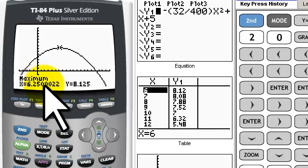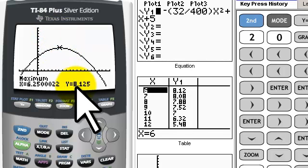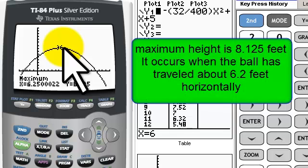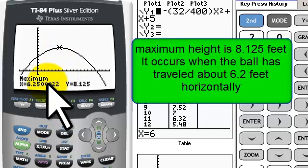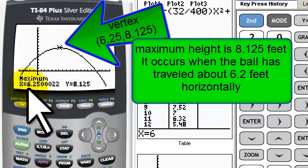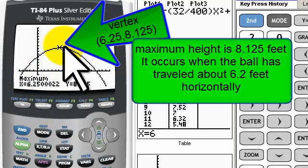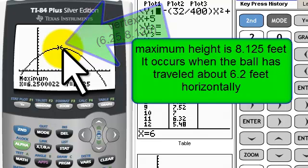And this is saying the maximum is 8.125 feet. That's the highest the ball got. In the math world, this is my vertex. When x is 6.25, my y is 8.125. But I want to know the height, and that was my y, 8.125.